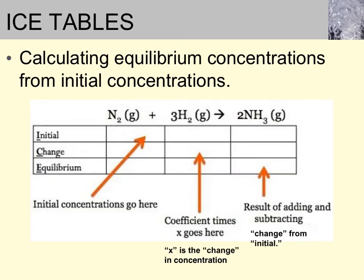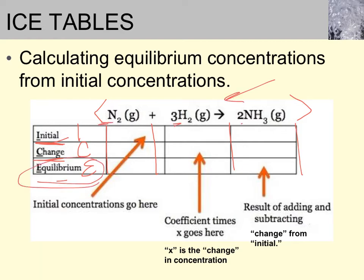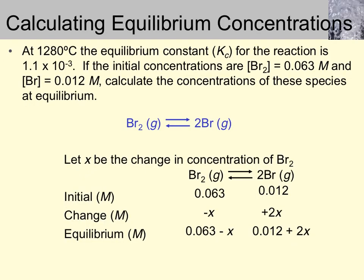A typical ICE table has the chemical equation written at the top, then the rows I, C, and E. Write a column under each reactant and each product. Initial stands for initial concentrations. The change row comes from the coefficients of the balanced chemical reaction. The equilibrium concentrations are determined by adding together the initial and change values.